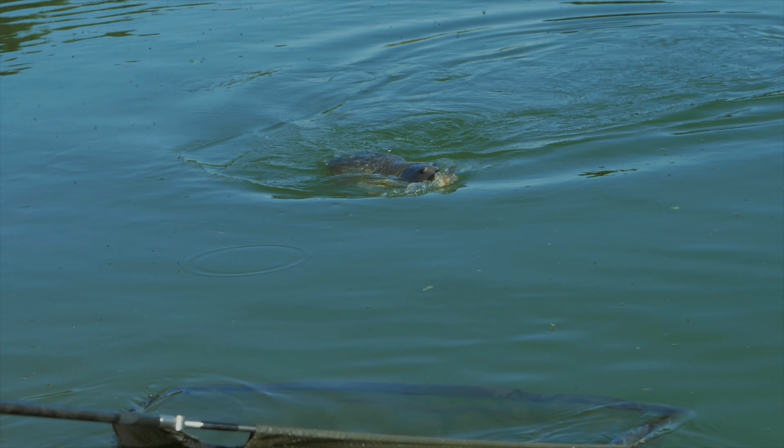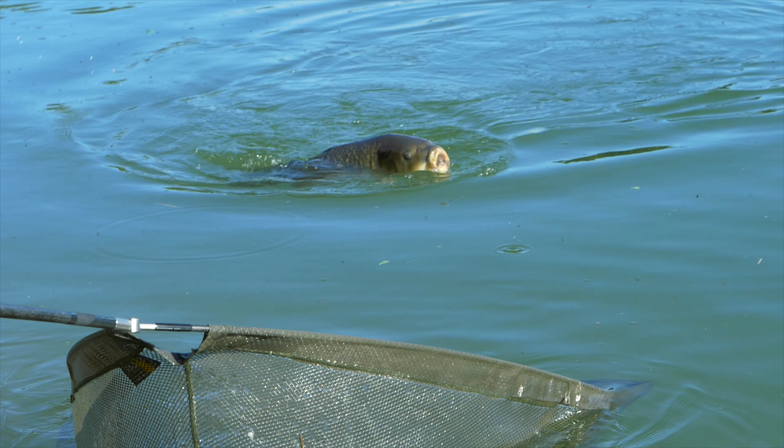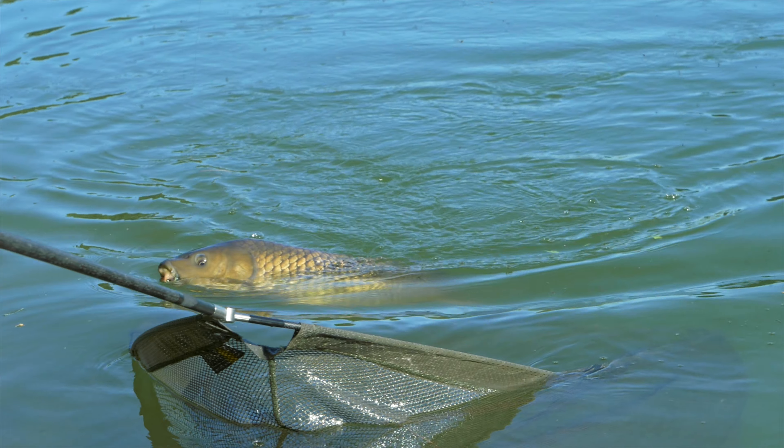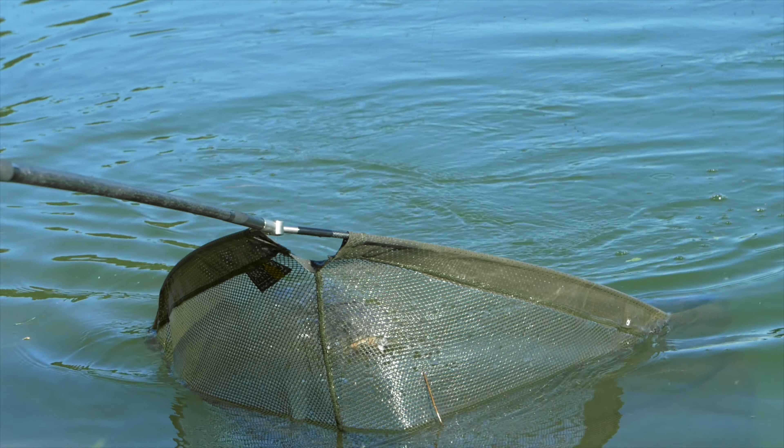When fishing for carp on the surface using some kind of controller float or just free lining, the same principle applies. The hook's point should be pointing towards the angler or towards the float, whether it's a controller or a vertical float.